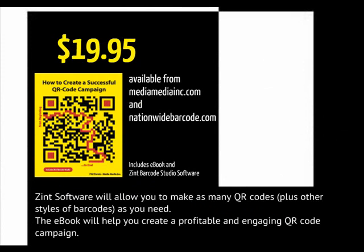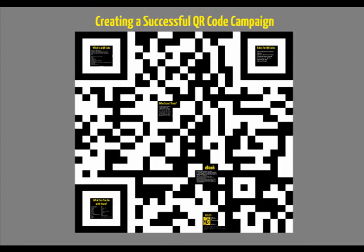The book is only $19.95. It's available from MediaMediaInc.com and NationwideBarcode.com. It includes the e-book, the software from Zint, and the full and abbreviated manual. Not only can you create QR codes with Zint software, but you can create up to 50 different other types of barcodes including UPC and EAN. The purpose of this book is to help you create a profitable and engaging QR code campaign. Scan the QR code right here and it'll take you right to my MediaMediaInc website. Thank you very much for your time.